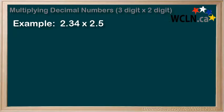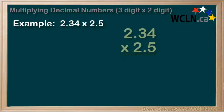Example 2.34 times 2.5. Let's line it up like this. Now we have two numbers on the bottom and let's start the same way we did before.